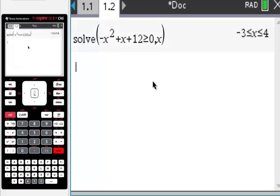And there it gives us the interval. But x has got to be greater than or equal to negative 3 and less than or equal to 4. So there's that.